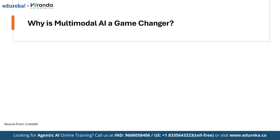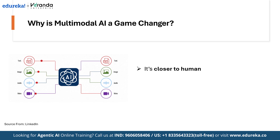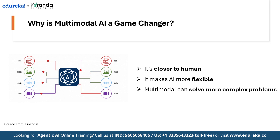Why is multimodal AI a game changer? Multimodal AI is powerful because it's closer to human intelligence — we don't rely on one sense, we combine many. It makes AI more flexible because one model can handle text, images, audio and more. It can also solve more complex problems, like explaining what's happening in a video or understanding a full conversation with context.